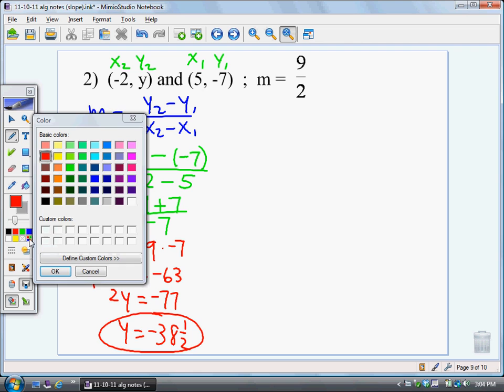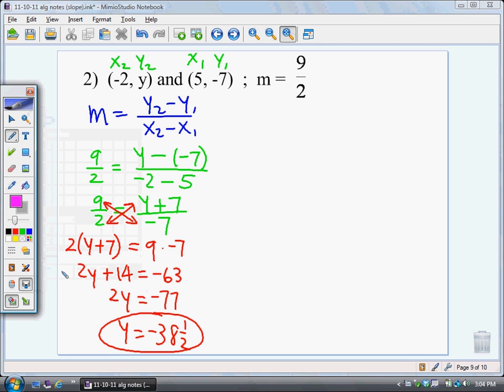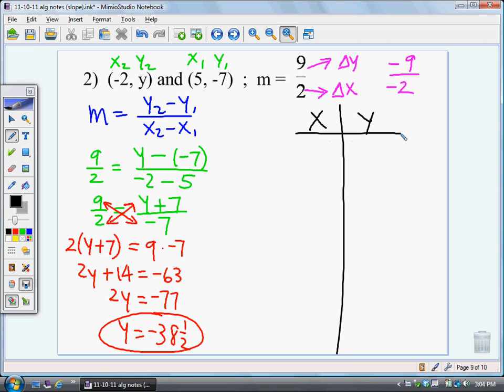If you were going to choose to do a table again, remember this top number is the change in y, and this is the change in x. And if positives don't work, you could consider negative 9 and negative 2, because that's the same thing as positive 9 halves. So if I work my way in my table and think about what I've started with and what I know, I have 5 negative 7, and we're trying to work our way to get negative 2 in some number, and whatever that number is is going to end up being our answer.